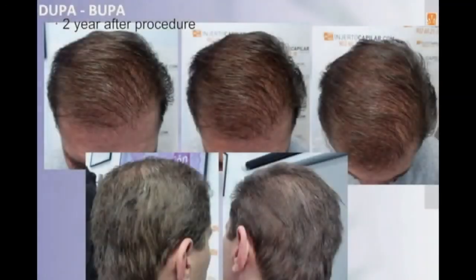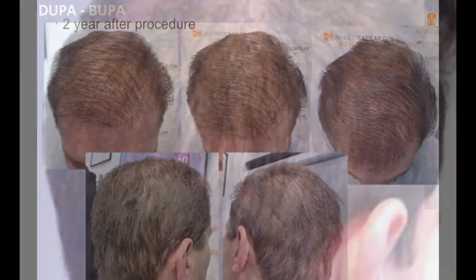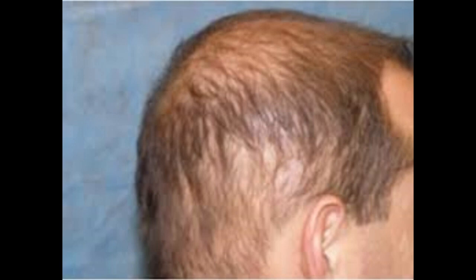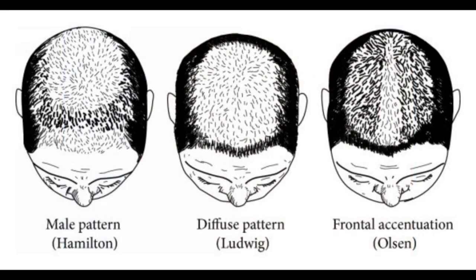Diffuse and Pattern Alopecia, or DUPA for short, is a subtype of the more commonly understood condition androgenetic alopecia. Unlike its better known counterparts, which often show distinct patterns of baldness, DUPA is characterized by a widespread thinning of hair across the scalp without a specific pattern. To fully appreciate the genetic and biochemical relationship between DUPA and conventional androgenetic alopecia, it is essential to dissect the multifaceted components of these conditions.